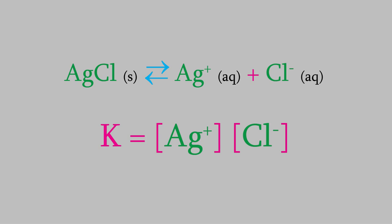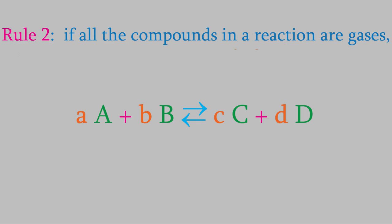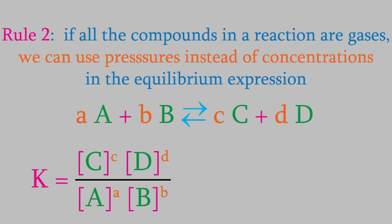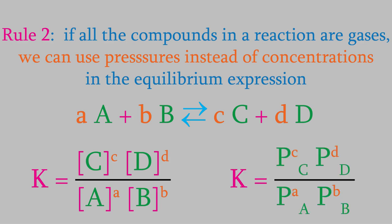There's one more rule you need to know about equilibrium expressions. If the compounds in the reaction are all gases, we can still calculate the value of K in the usual way by measuring the concentrations and plugging them into the equation. However, sometimes it's easier to measure the pressure of a gas instead of its concentration. In that case, we can use pressures instead of concentrations in our expression for the equilibrium constant. We'd write the equilibrium expression using pressures, measured in atmospheres. Notice that we still need to raise each pressure by the coefficient in the balanced reaction.